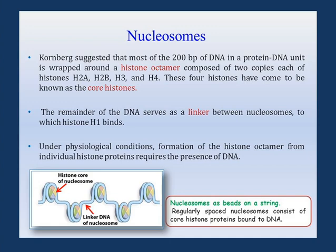The histone octamer consists of two copies each of the four histones H2A, H2B, H3, and H4 — four proteins times two copies equals eight total, which is why it is called an octamer. This histone octamer forms the core around which the DNA is wrapped into two turns. The basic repeating unit of DNA around the nucleosome is 200 base pairs, out of which 146 base pairs are wrapped around the histone core.